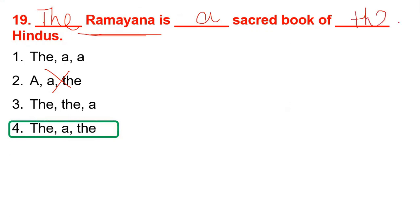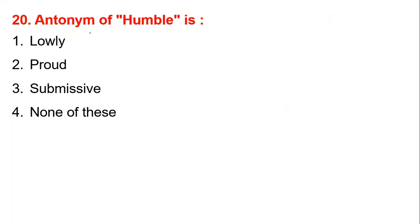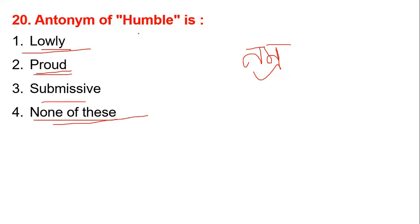Our last question is number twenty: antonym of 'humble'. Humble means modest. The antonym options are: lowly, proud, submissive. Lowly and submissive are similar in meaning to humble, so the antonym is 'proud'. So the answer is proud — option proud is correct.